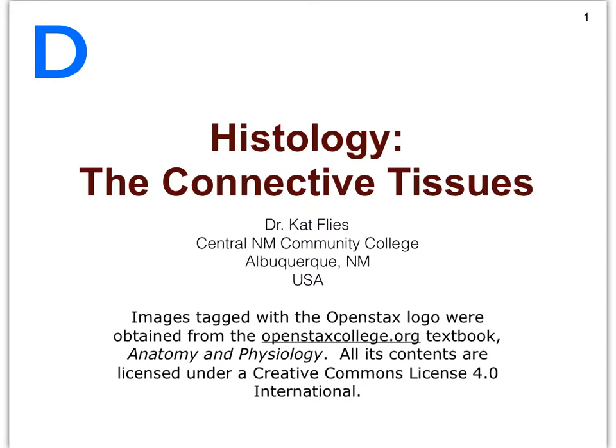In AMP2, you will learn in much more depth all the details about the blood. Remember, blood is our fourth connective tissue type. We finished discussing the biggest group, that is the connective tissue proper, with its loose and dense connective tissues. Our second group, made up of three types, is the cartilages.